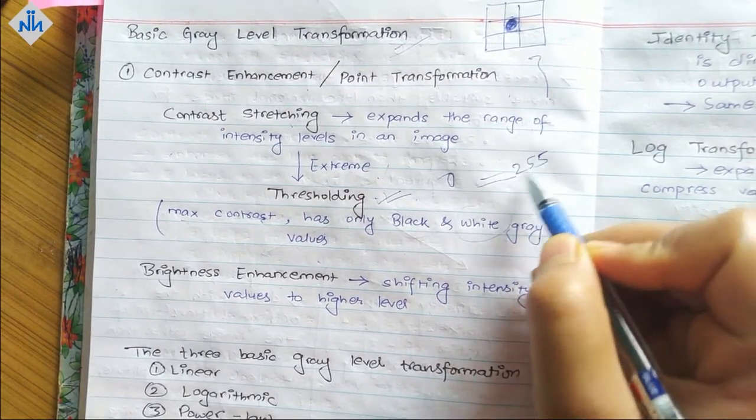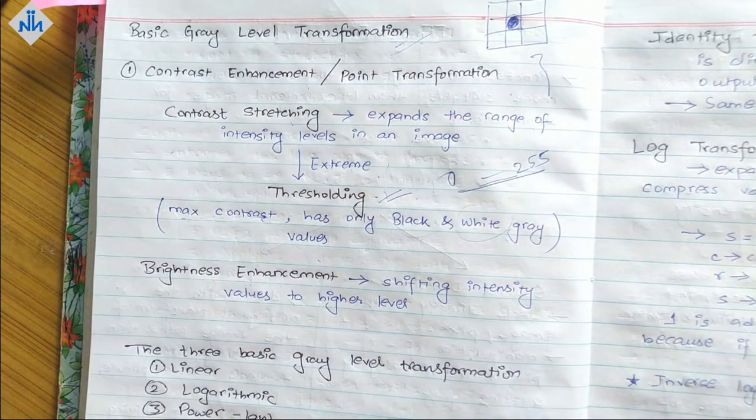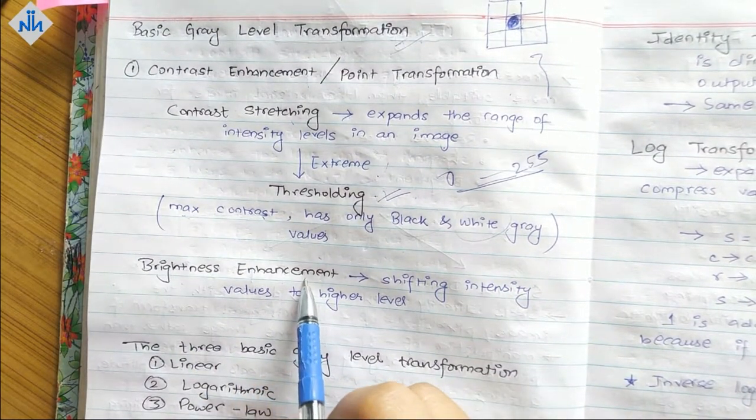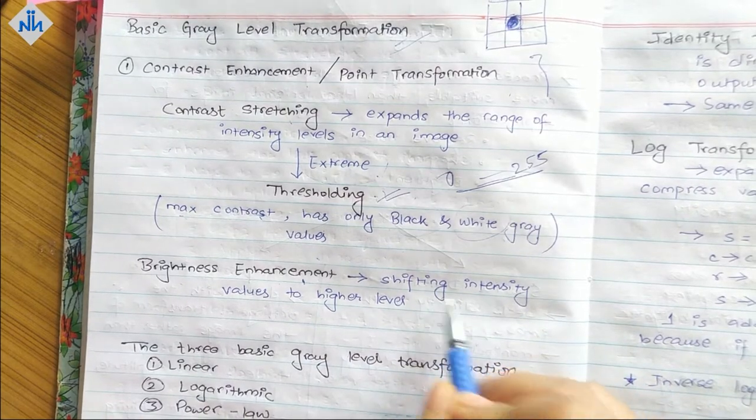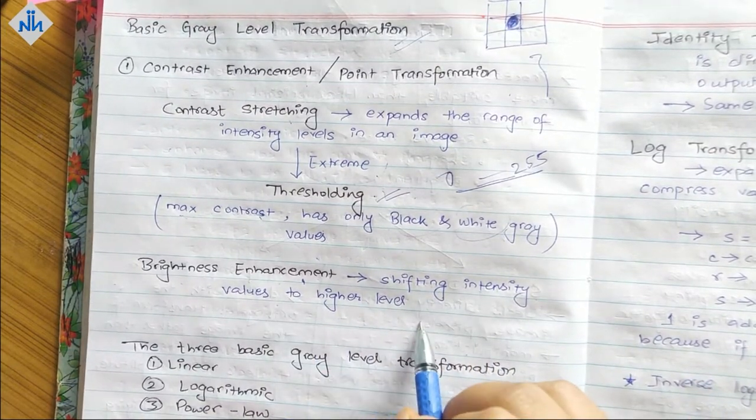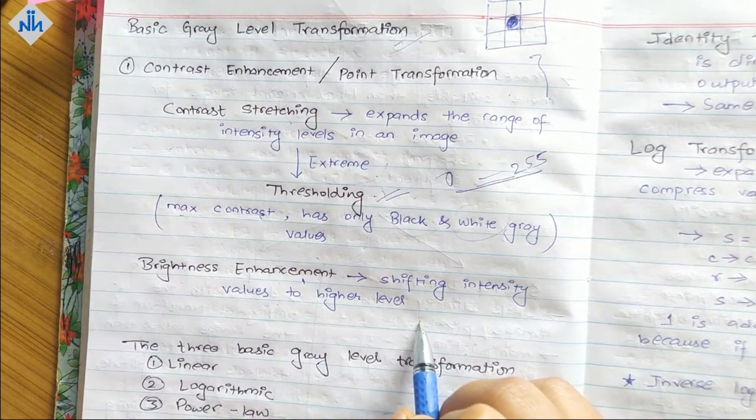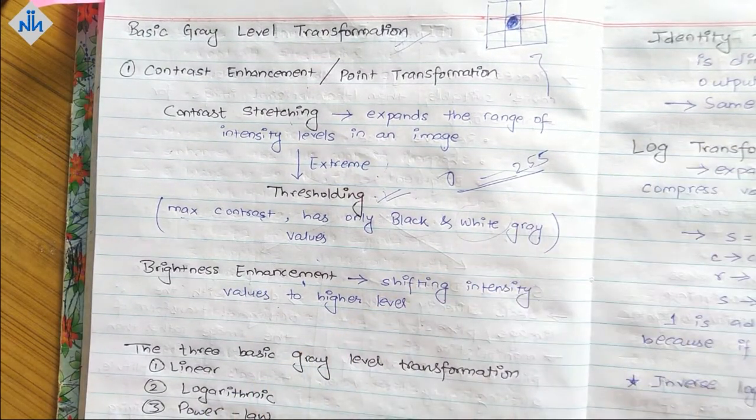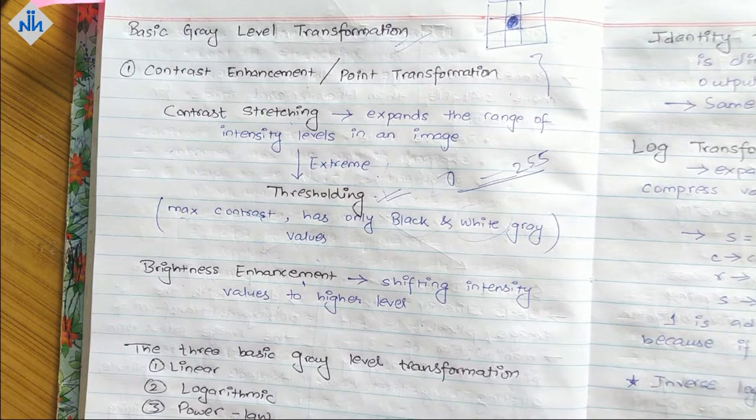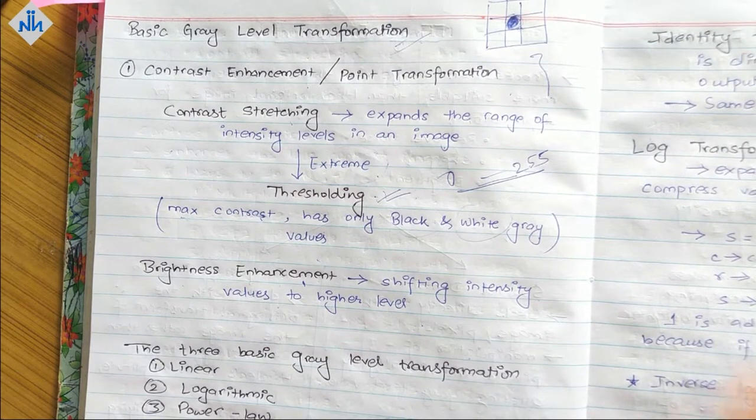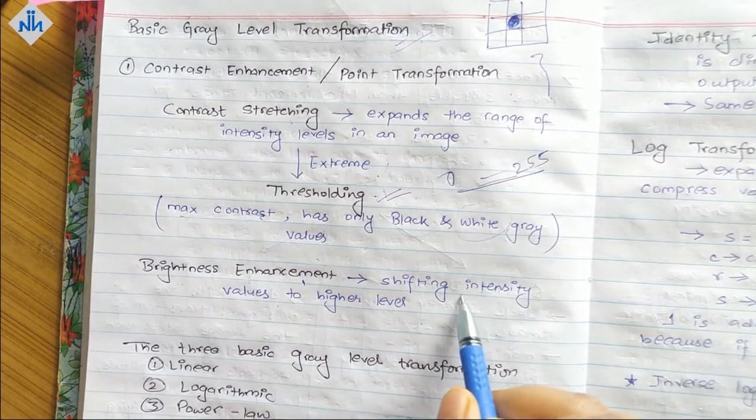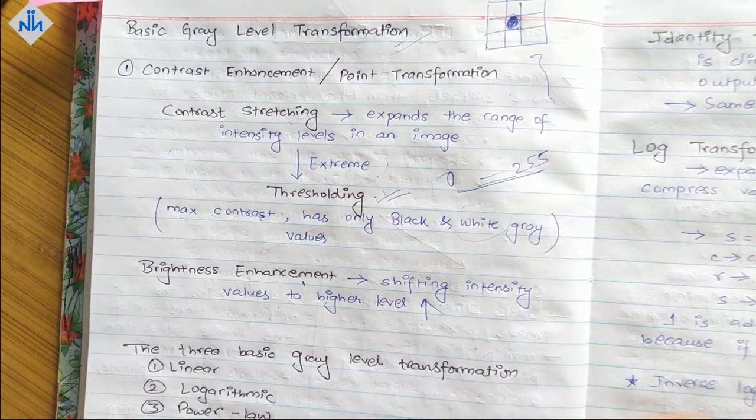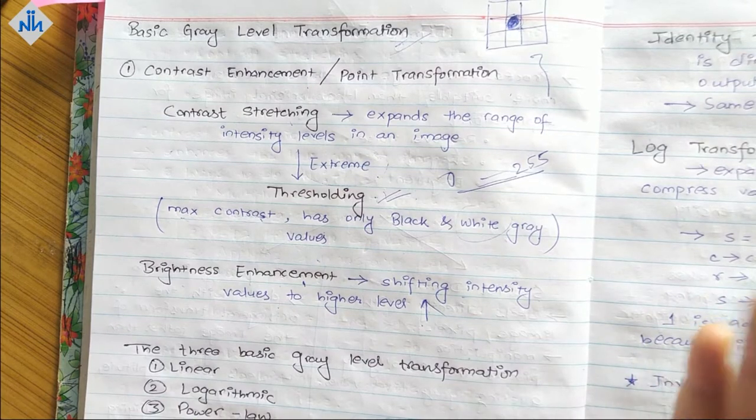Then we have brightness enhancement. In brightness enhancement what we do is shift the intensity values to higher levels. We want to brighten the image, so the darker ones become brighter and the brighter ones become even brighter. We shift intensity levels to higher levels so the image will be brighter. If we decrease it, it will become darker.